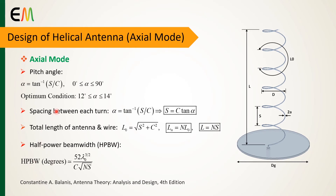In the next step, we should consider a value for the pitch angle parameter. In order to achieve the optimum design, the pitch angle should be between 12 and 14 degrees. By this condition, the spacing between each turn can be calculated using this relation. After that, the remaining parameters such as total length of the antenna, total length of wire, and half-power beam widths are obtained by these relations.